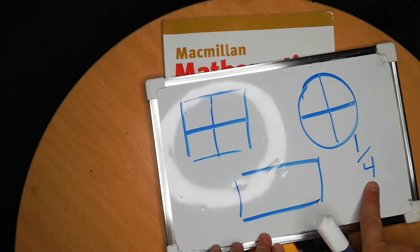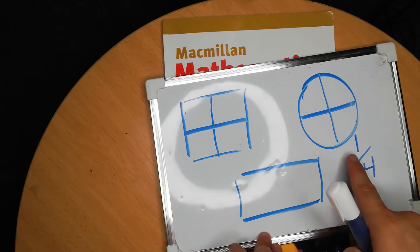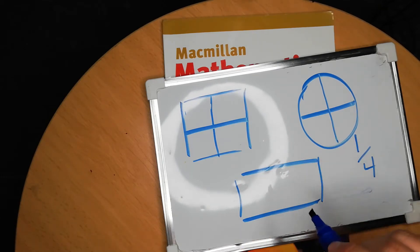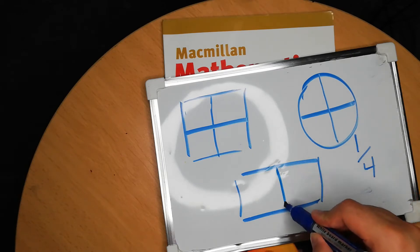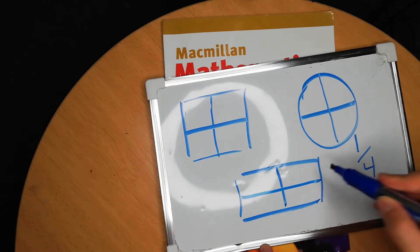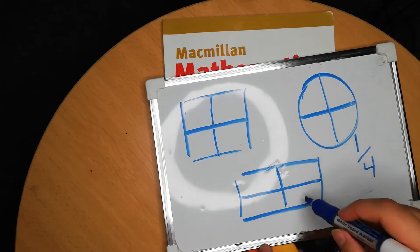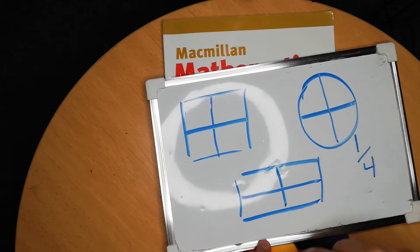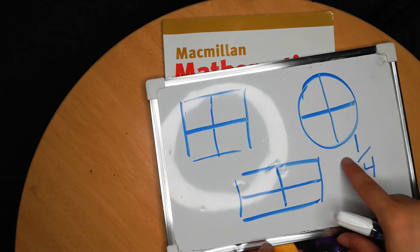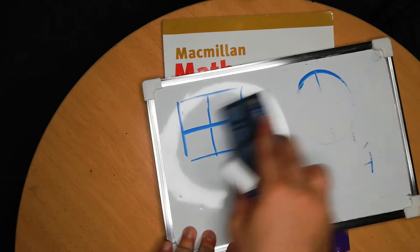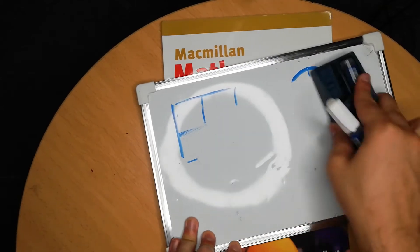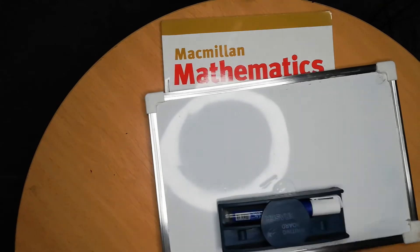We have four pieces of a whole — four pieces — and they are the same size and shape. So that's a quarter: four equal pieces of a whole. These are the divisions we did last time.